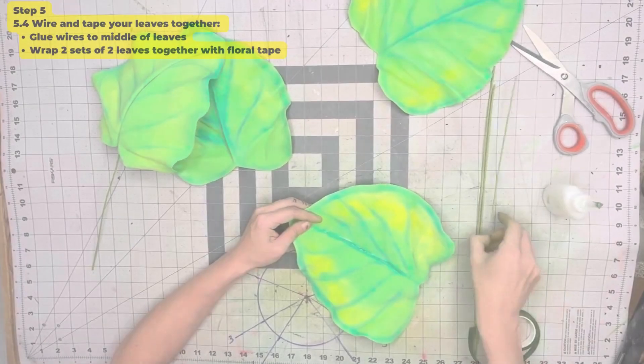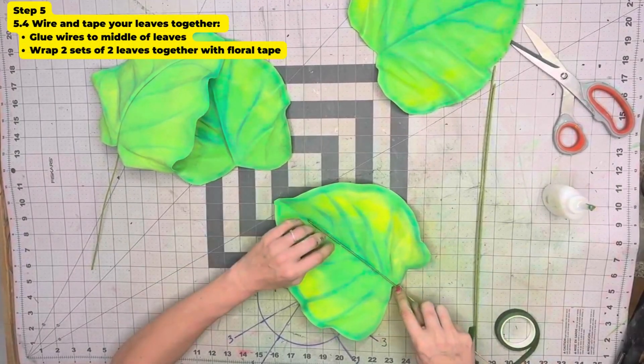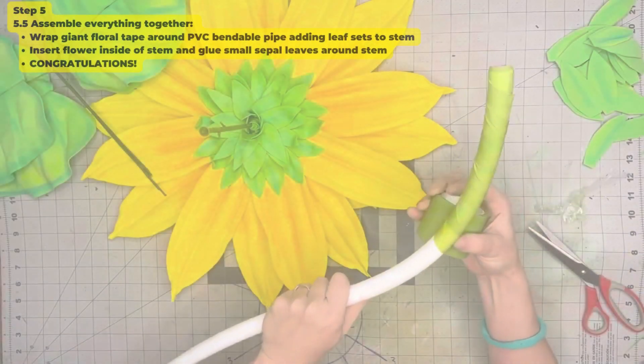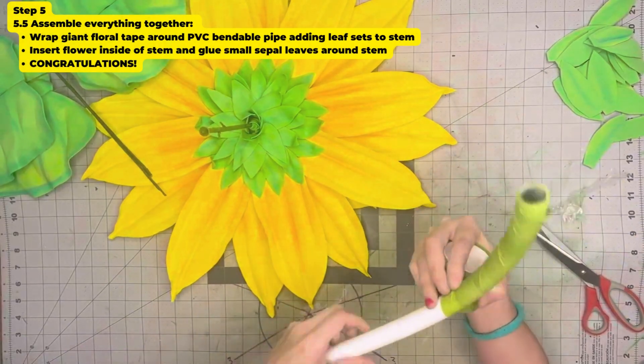We are going to dab a glue. We are going to put our 14 gauge wire, and here we go. Now you are going to calculate where you are.